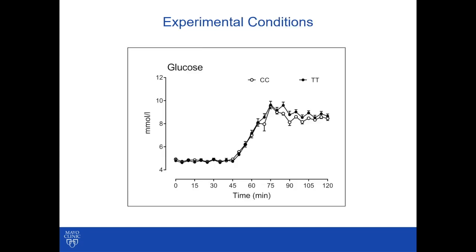These are the experimental conditions under which we did the experiment. For the first 45 minutes, we studied insulin pulse characteristics during euglycemia. Subsequently, we raised glucose concentrations over a 30-minute period and clamped them at about 160 milligrams per deciliter. In the subsequent 45 minutes — the hyperglycemic phase of the experiment — we also measured insulin pulse characteristics.